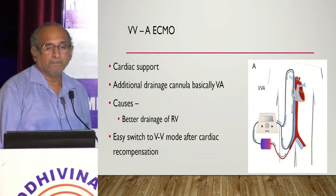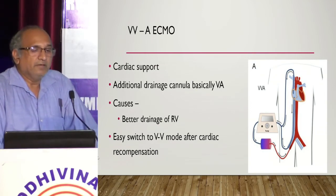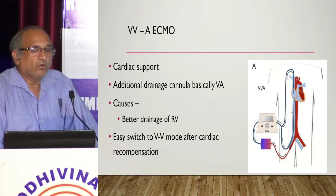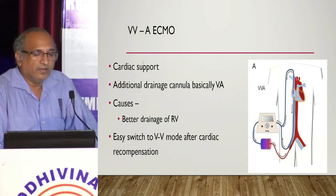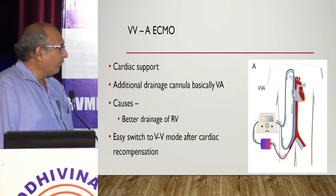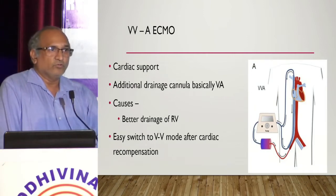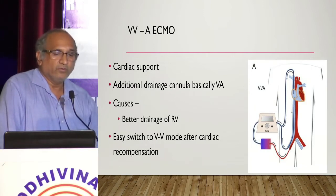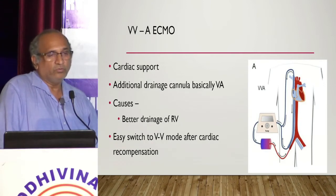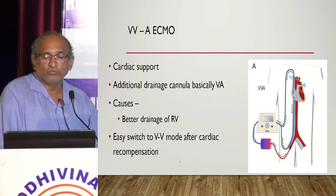VVV is used only for lung support. The second variant, VVA, is basically for cardiac support — when you are not able to drain completely, you add an additional drainage cannula for better drainage of the RV. The advantage is that if the heart recovers and the lung still takes time, you can switch over easily from VA to VV ECMO.